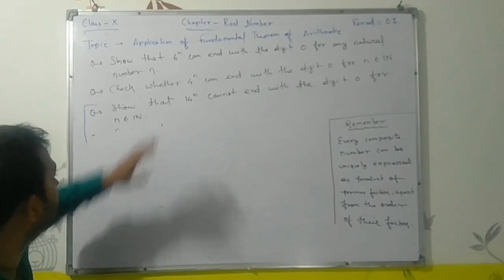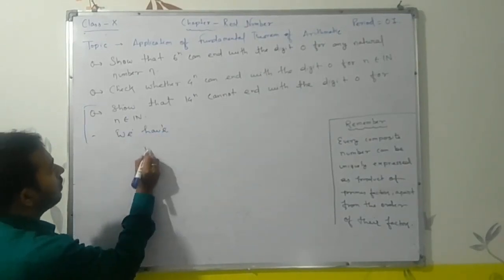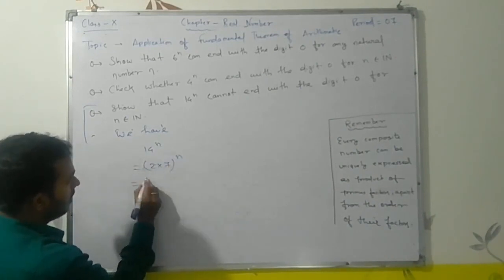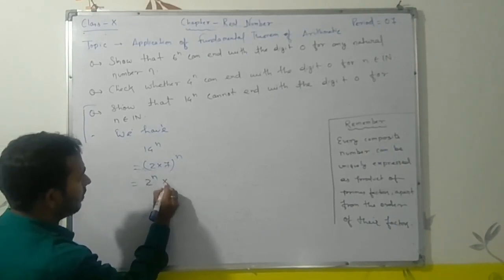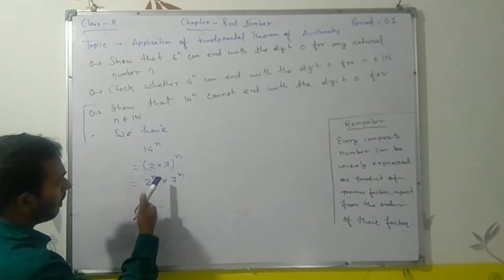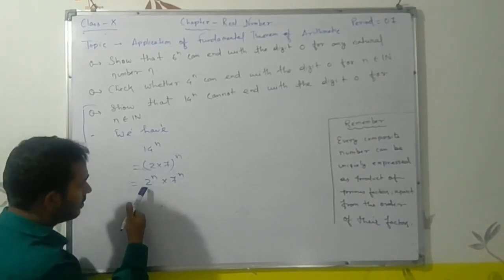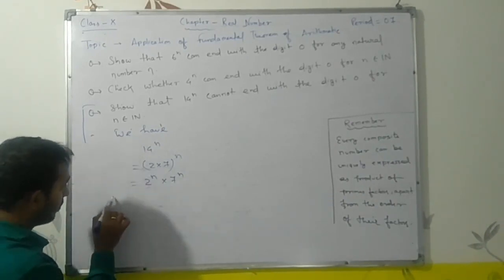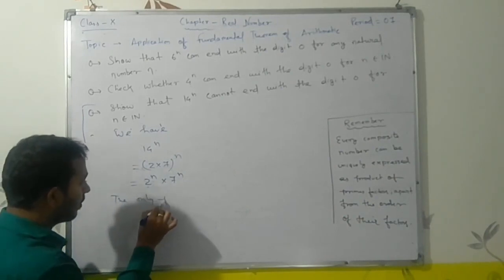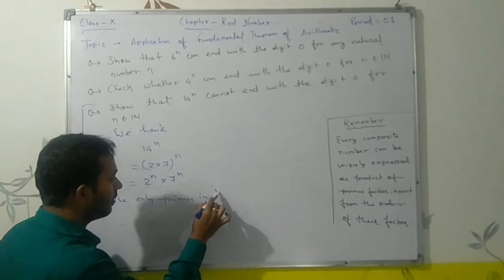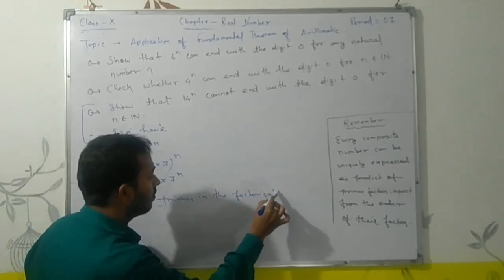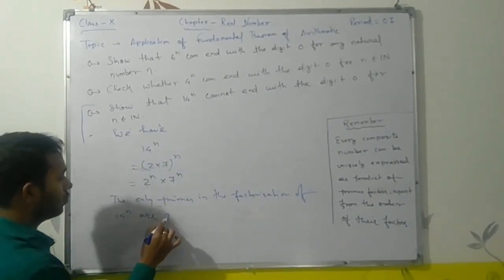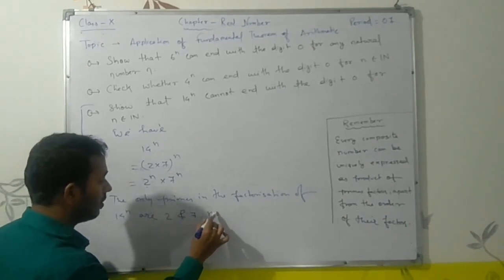We have 14ⁿ, which can be written as (2×7)ⁿ. Using the law of exponents, this equals 2ⁿ × 7ⁿ. You can see that the factors here are 2 and 7. That means the only primes in the factorization of 14ⁿ are 2 and 7 — not 5.